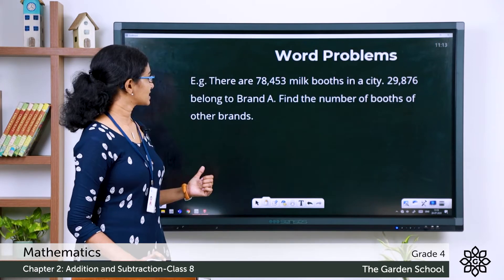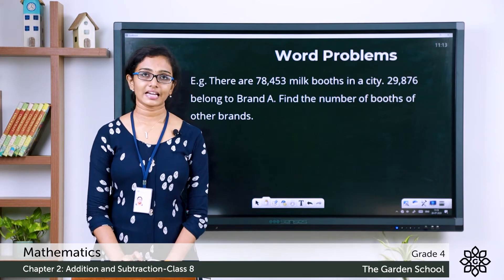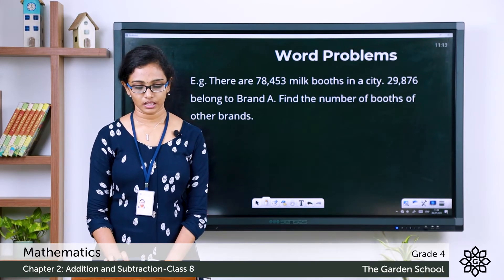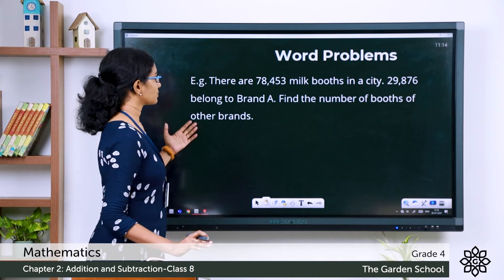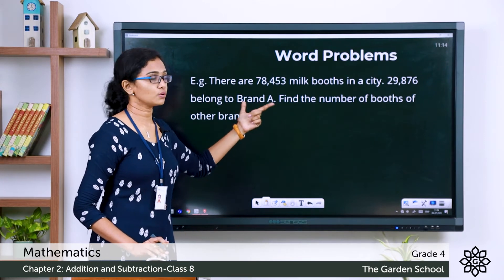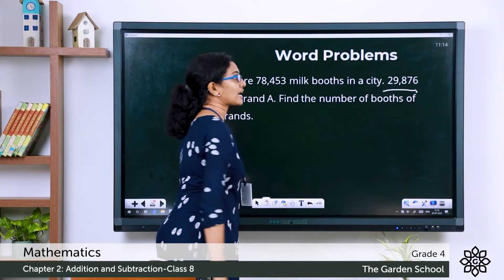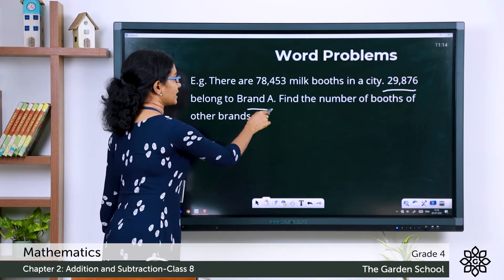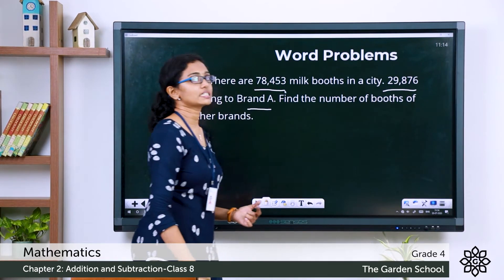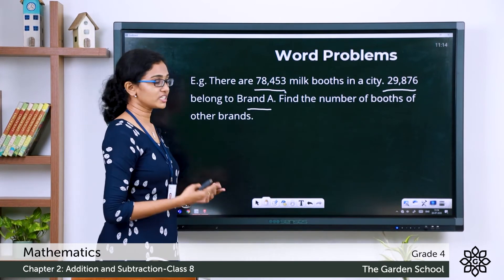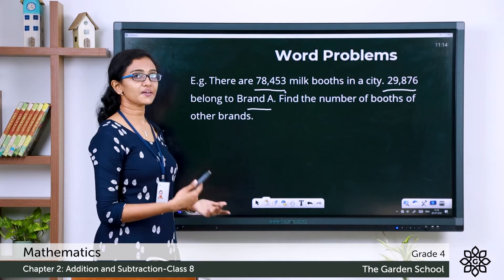Look at this example. There are 78,453 milk booths in a city. 29,876 belong to brand A. Find the number of booths of other brands. You are given the total number of milk booths in a city, and 29,876 belong to brand A. Out of 78,453, those 29,876 booths are the ones belonging to brand A. You are asked to find the number of booths of the other brands.